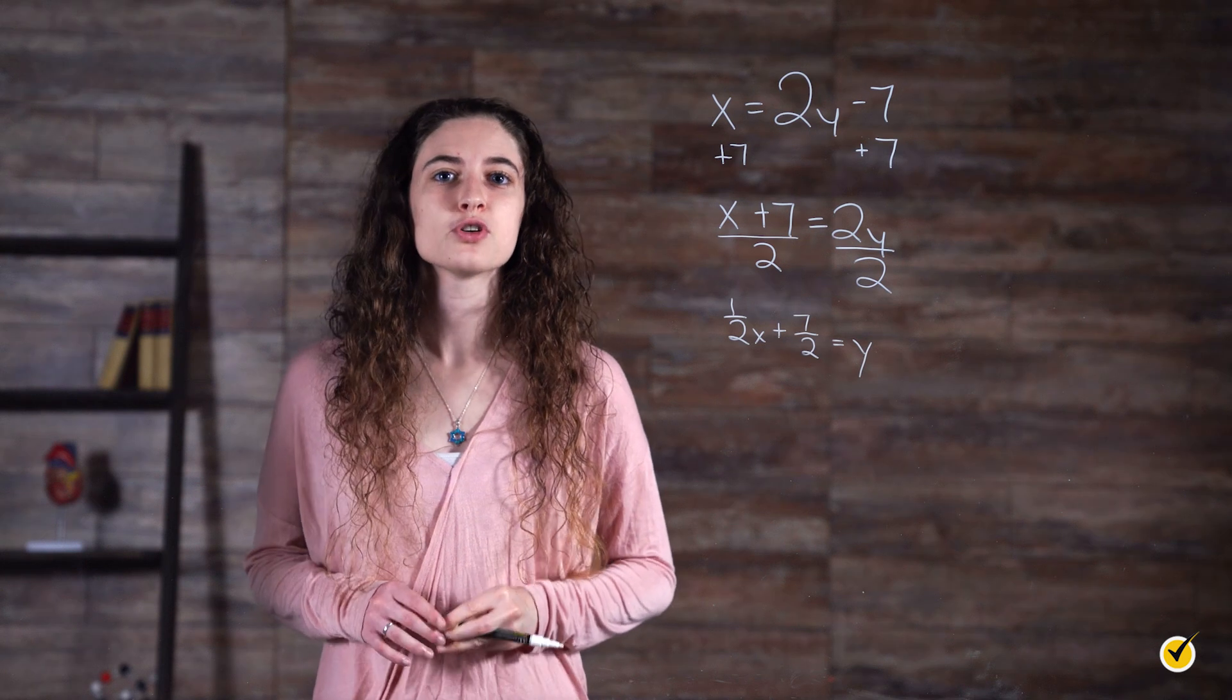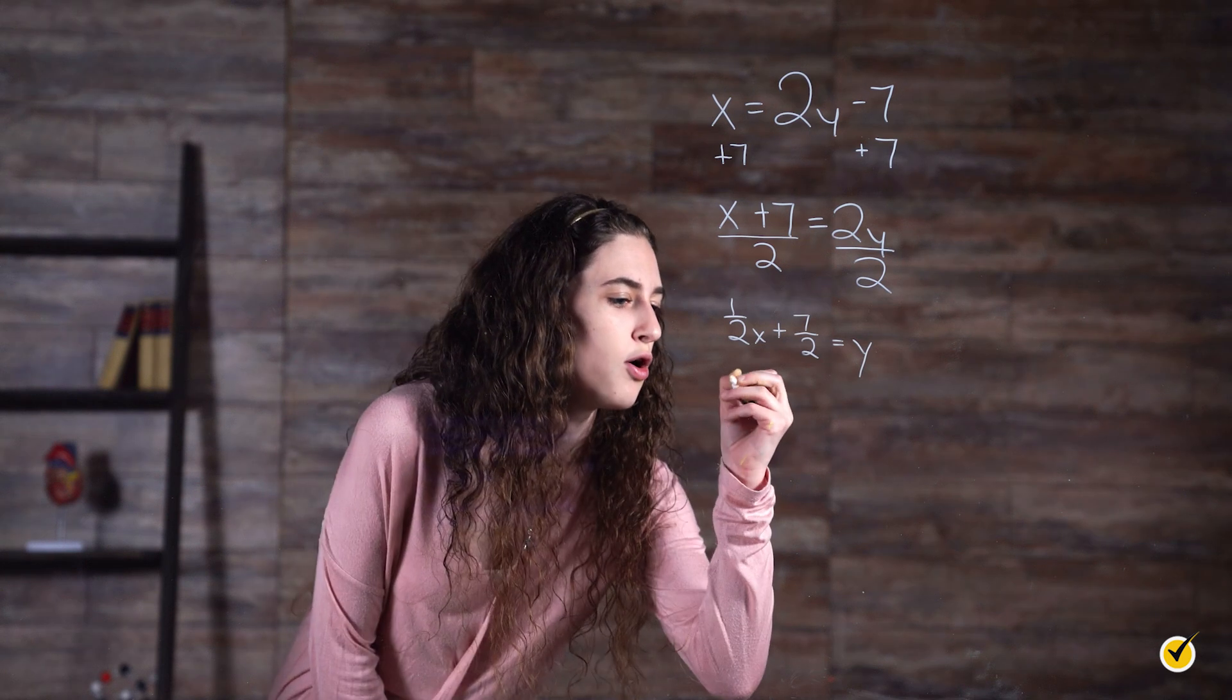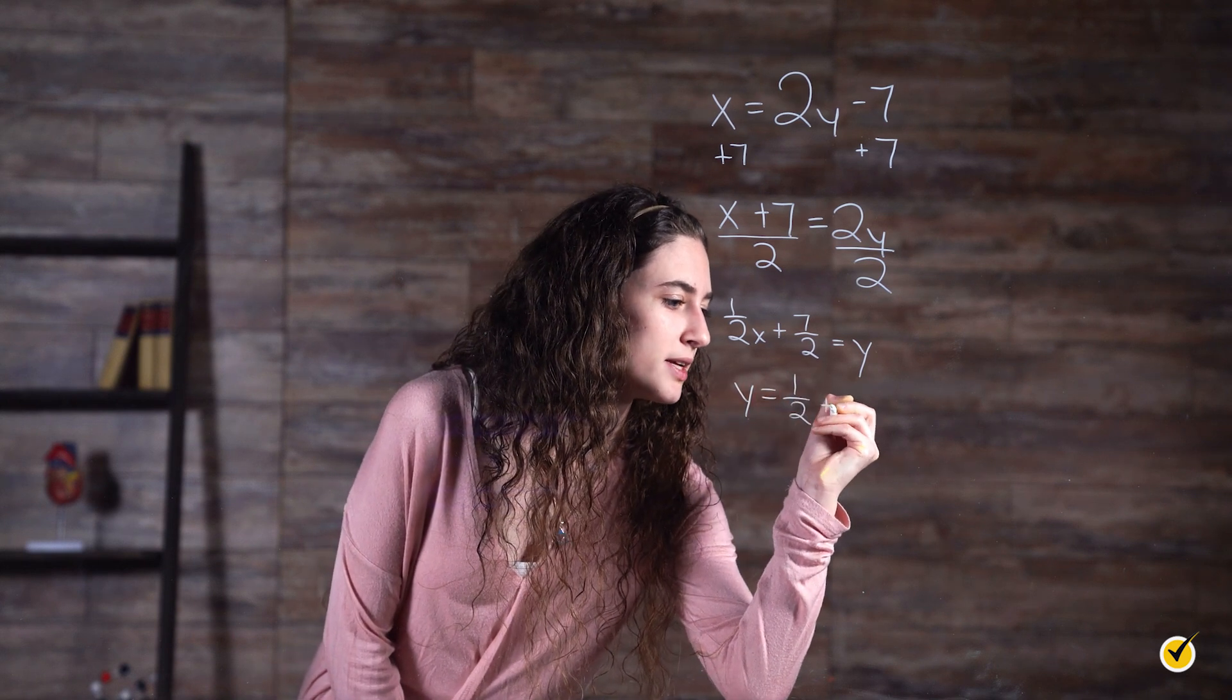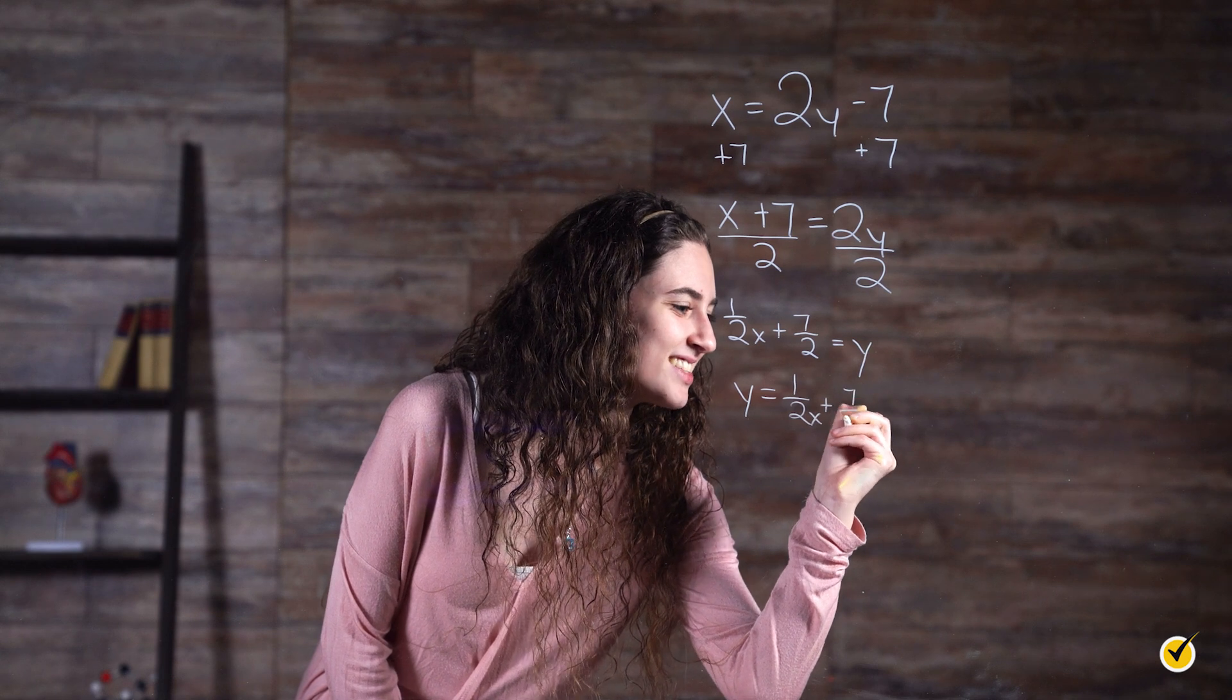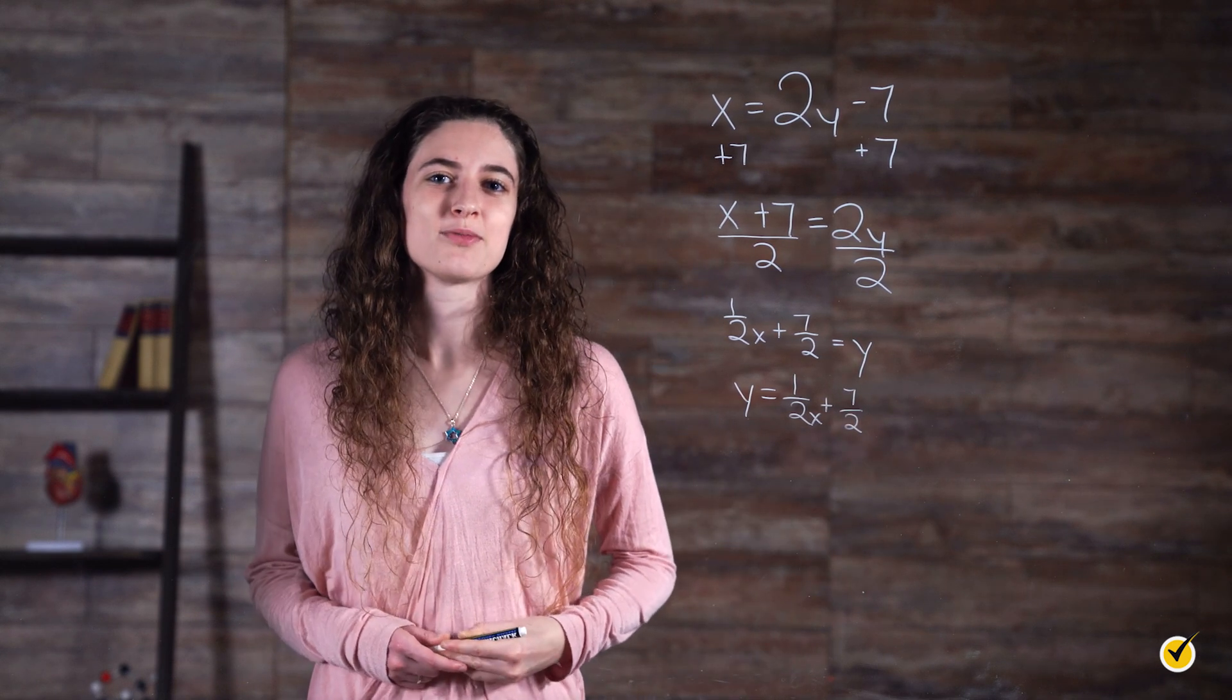All that's left is to flip our equation around so the y is on the left side of the equation. y equals 1 half x plus 7 halves. Now we have our equation in slope-intercept form.